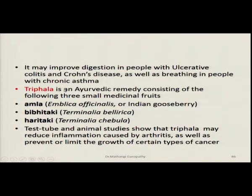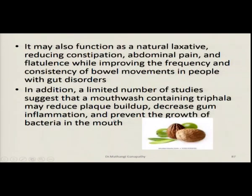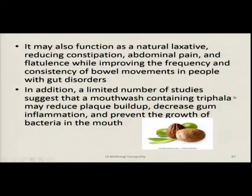Triphala is another well-known Ayurvedic medication consisting of three small medicinal fruits: amla or Emblica officinalis (Indian gooseberry), bibhitaki or Terminalia bellirica, and haritaki which is Terminalia chebula. Test tube and animal studies show that triphala may reduce inflammation caused by arthritis as well as prevent or limit the growth of certain types of cancer. It also functions as a natural laxative, reducing constipation, abdominal pain, and flatulence, and improves the frequency and consistency of bowel movements in people with gut disorders. A limited number of studies suggest that a mouthwash containing triphala might reduce plaque formation, decrease gum inflammation, and prevent microbial growth in the mouth.